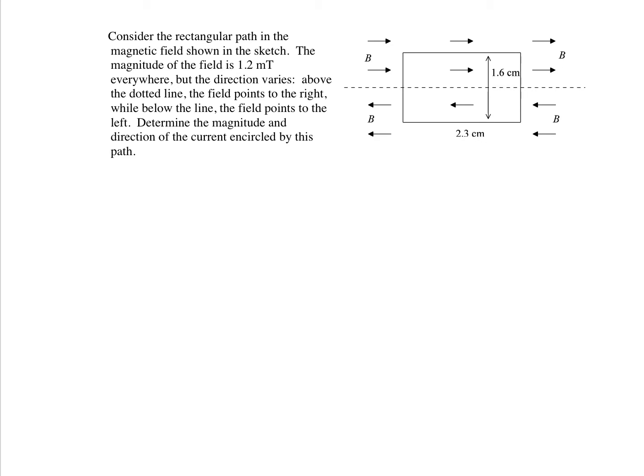What we have here is a case where we have a magnetic field that has the same magnitude 1.2 milliteslas everywhere, but on the top half of this figure the magnetic field points to the right, whereas on the bottom half it points to the left. And on this plot is already drawn an Amperean path that has a width of 2.3 centimeters and a height of 1.6 centimeters, and we're asked to determine the magnitude and the direction of the current that's encircled by this Amperean path.